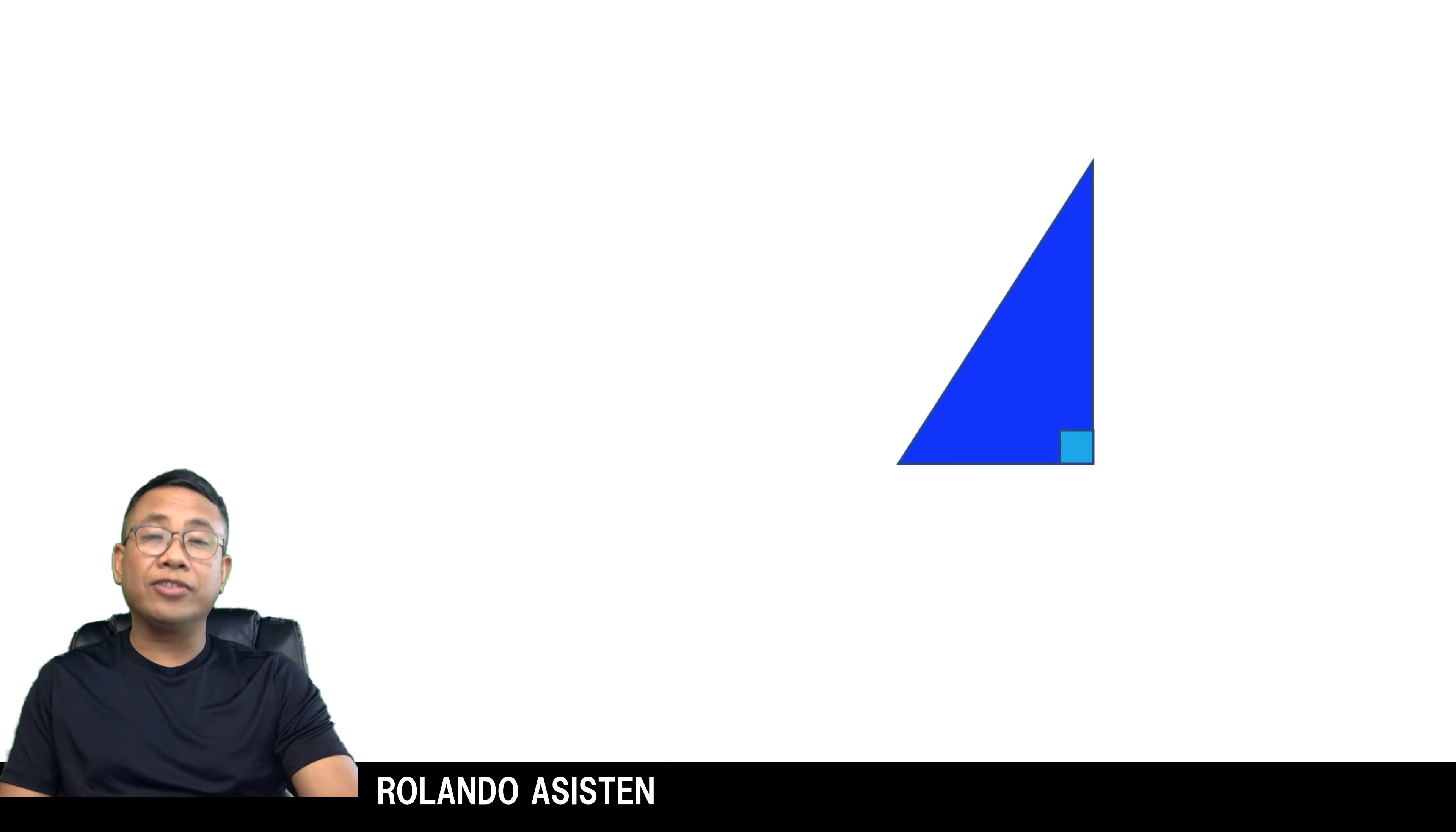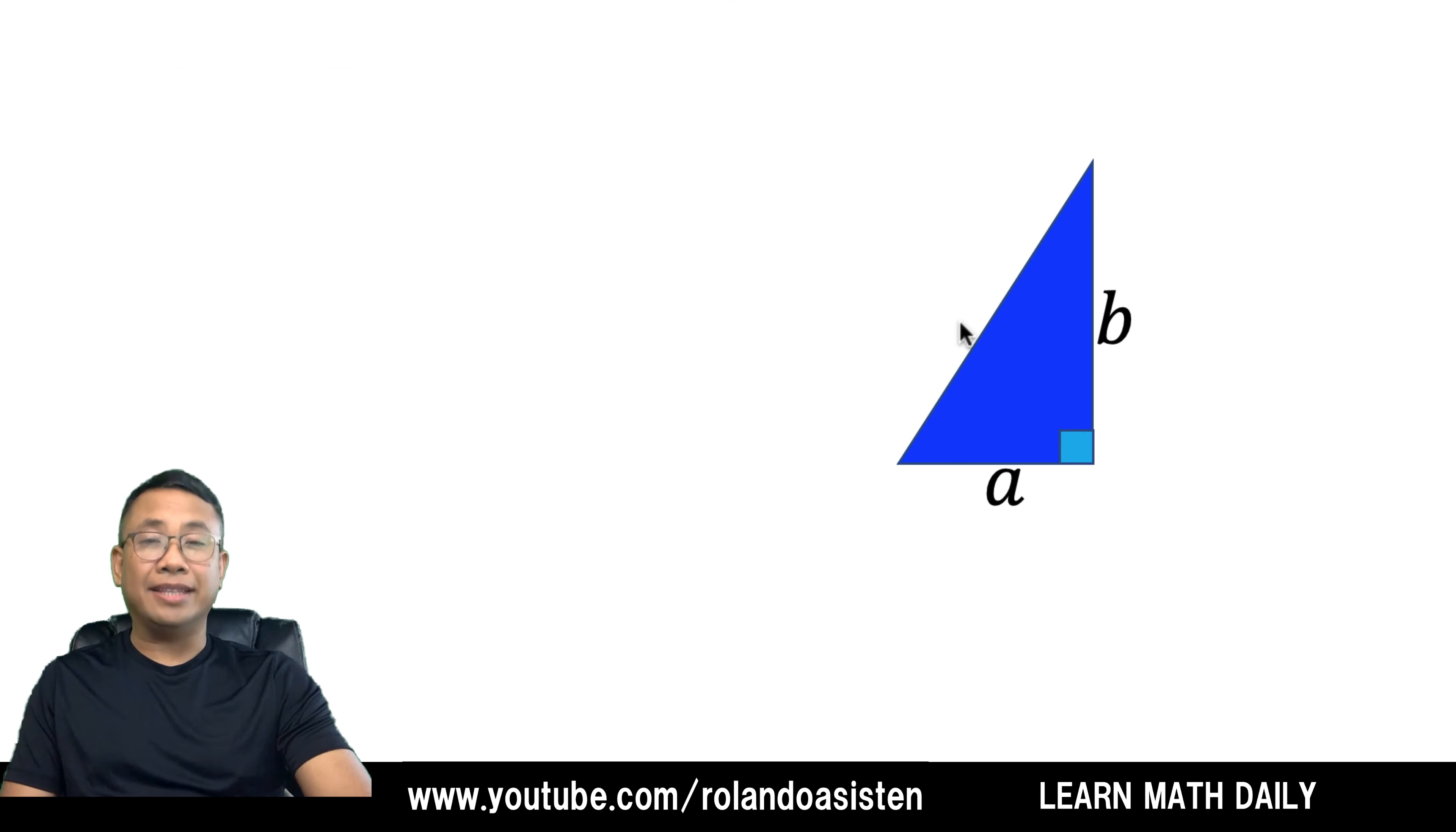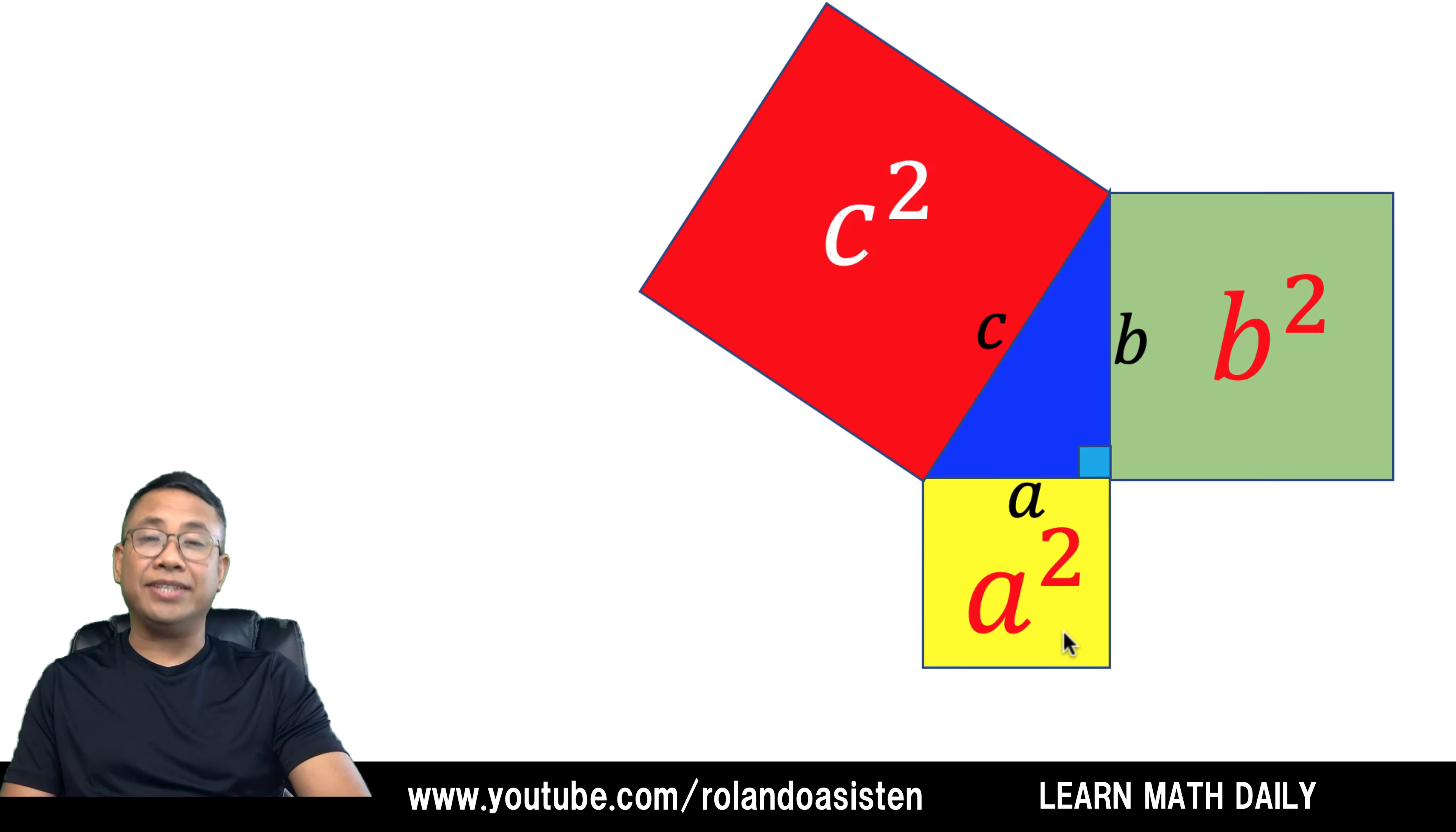Let's start with this right triangle with sides A, B, and C. Let's square side A to have A squared, then let's square side B to get B squared, and let's square side C to get C squared.